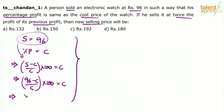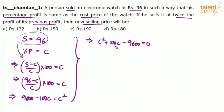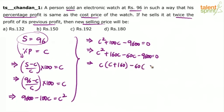Let's solve the quadratic equation. We get 96 into 100: 9600 minus 100C equals C squared, or C squared plus 100C minus 9600 equals 0. To factorize, 160 and 60 will give that product. So we have C squared plus 160C minus 60C minus 9600 equals 0. Taking C common gives C plus 160; taking minus 60 common also gives C plus 160, since 60 into 160 is 9600.